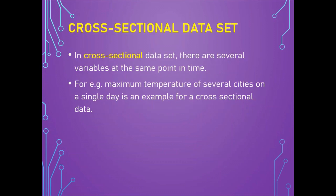Cross-sectional datasets are represented by several variables at the same point in time. For example, a dataset with maximum temperature, humidity, and wind speed of a few cities on a single day. Another example would be sales revenue, sales volume, number of customers, and expenses of an organization in the past month. The main difference is that time series data focuses on the same variable over a period of time, whereas cross-sectional data focuses on several variables at the same point in time.